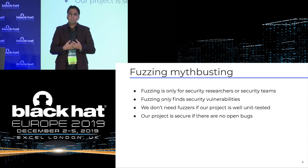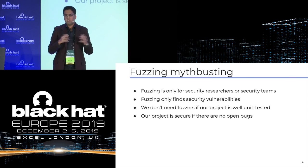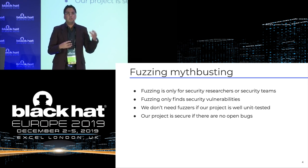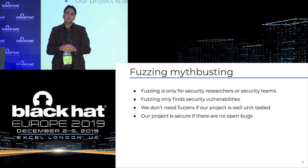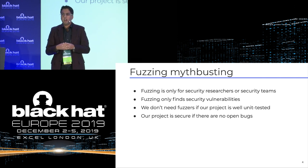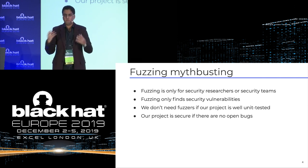Another myth we hear quite a lot is: we don't need fuzzing because our project is very well unit tested. You have to understand that unit testing only tests a small subset of the expected input search space. For example, the SQLite library claims to have 100% branch test coverage, but when we added structure-aware fuzzers, we started finding dozens of new security vulnerabilities.